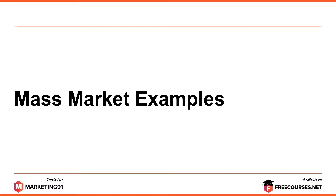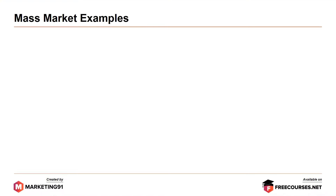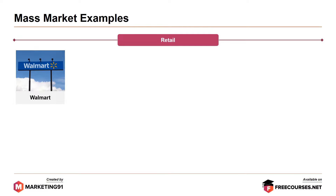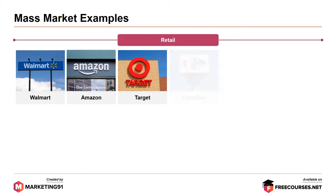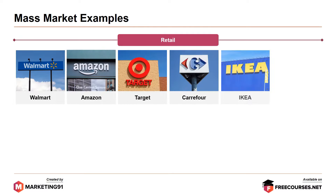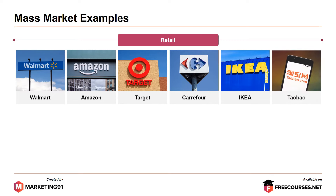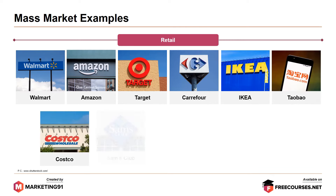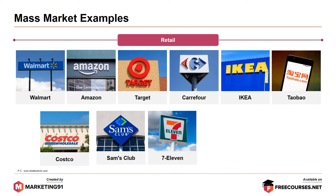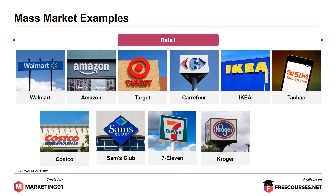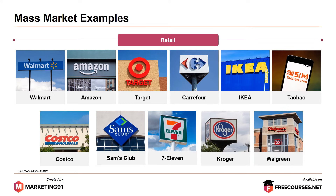Let's look at some of the companies that fall into the mass market category. First, in the retail segment, brands such as Walmart, Amazon, Target, Carrefour, furniture-based retailer IKEA, Taobao, Costco, Sam's Club, convenience store retailer 7-11, Kroger and Walgreen. The products provided by most of these retailers are in the same lines and they cater to the mass market.